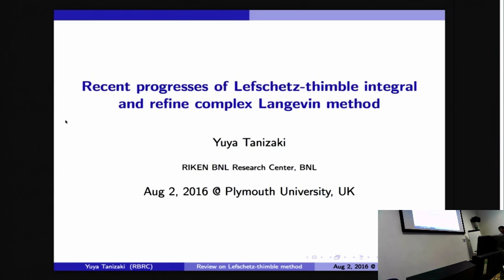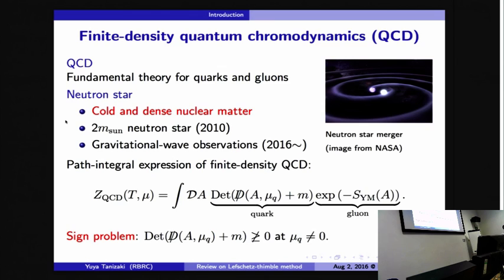I'd like to thank the organizers for the invitation. I'm very happy to give a presentation on recent progress on the Lefschetz thimble. I'd like to start with a brief motivation. We are interested in extreme conditions of quantum chromodynamics. One natural candidate in our universe is inside the neutron star, because inside the core of the neutron star there must exist very cold, dense nuclear matter, and conventional nuclear theory may not work in such extreme conditions. We'd like to study it from the viewpoint of fundamental dynamics of quarks and gluons.